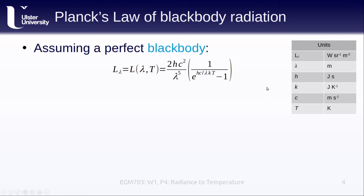The units for each of the variables are shown here in the table on the side. Note that because this is the spectral radiance, denoted L with a lambda subscript, the units are watts per steradian per cubic meter. What this tells us is that if we can measure radiance, we can calculate the radiant temperature by inverting this equation for the temperature.